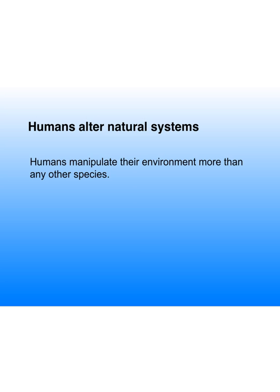Humans alter natural systems. Humans manipulate their environment more than any other species — that's one of the things that differentiates us. When we say that something is human-caused, we call that centered around humans or pertaining to humans. The word for humans in Greek is 'anthropos,' and centered around would be 'centric' — so anthropocentric. Anthropocentric means human-made or human-sourced.